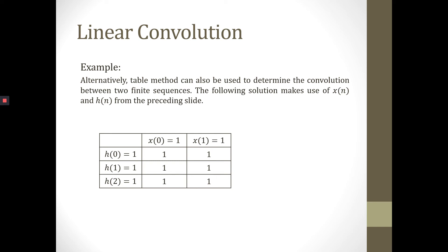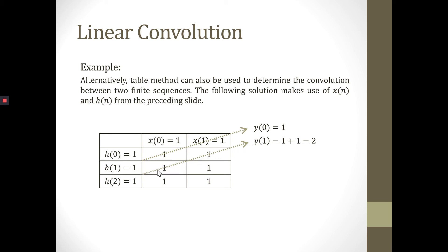This is the technique to produce the output response Yn. We start with Y for N equal to 0, taking this value of multiplication of H0 and X0. So Y0 is equal to 1. The next one, we increase N by 1 for the output response Y1, moving to the next row. We start from this corner to the middle corner and to the end corner. Going through these dotted lines, we sum the multiplication values: 1 plus 1, which is equal to 2.